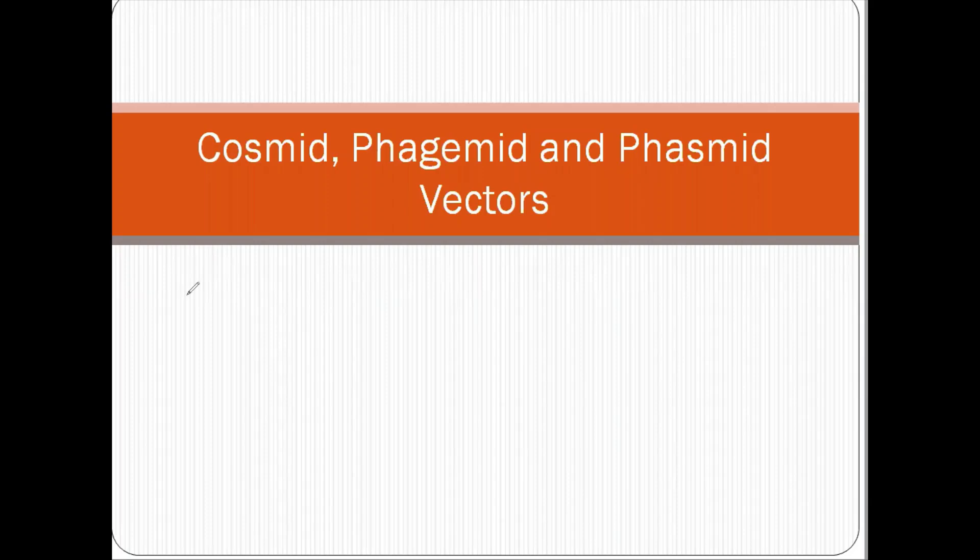In the previous videos, we learned something about plasmid vectors and bacteriophage vectors. So today we are going to learn what is cosmid, phagemid and phasmid. And it's very interesting to know that these three are formed by some modifications in plasmid and bacteriophage vectors.